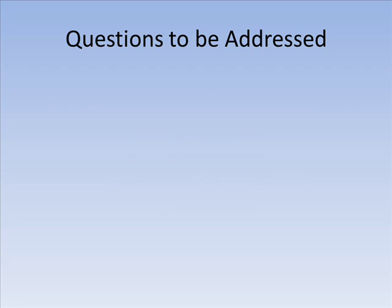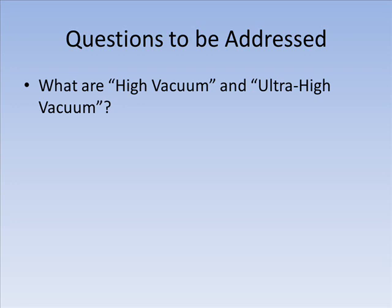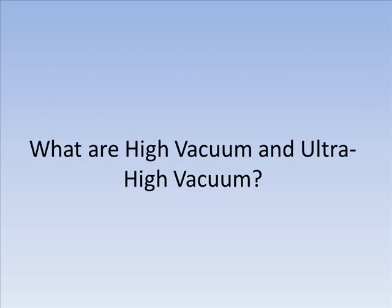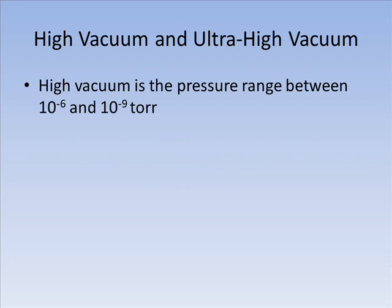We begin by addressing the questions: what do we mean by high and ultra-high vacuum, why are they useful, and how do we build vacuum systems? High and ultra-high vacuum are just terms for two different pressure regimes. High vacuum systems have a pressure that lies approximately within the range of 10 to the minus 6 to 10 to the minus 9 torr, but this range can vary widely depending on who you ask. Sometimes a distinction is made between high vacuum and very high vacuum, but when I refer to high vacuum, I will be referring to the range shown here.